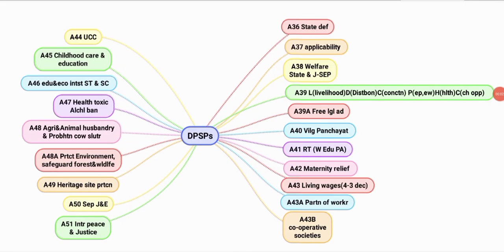Hello, today we will study tricks on how to remember the DPSPs. DPSP is Part Four of the Union Constitution and it starts from Article 36 to 51. Article 36 is the state definition — it is the same as Part Three of the Union Constitution, Article 12.